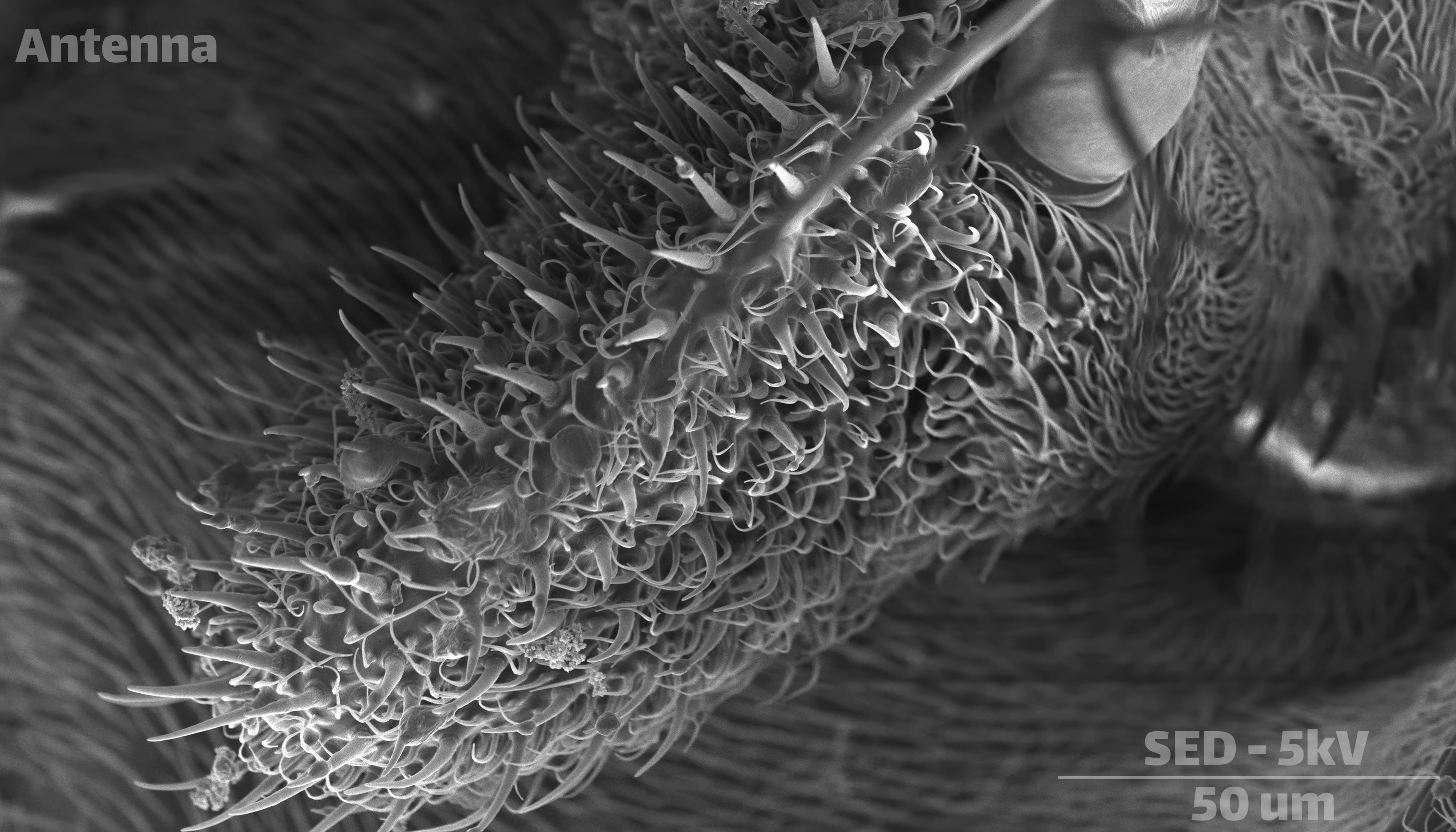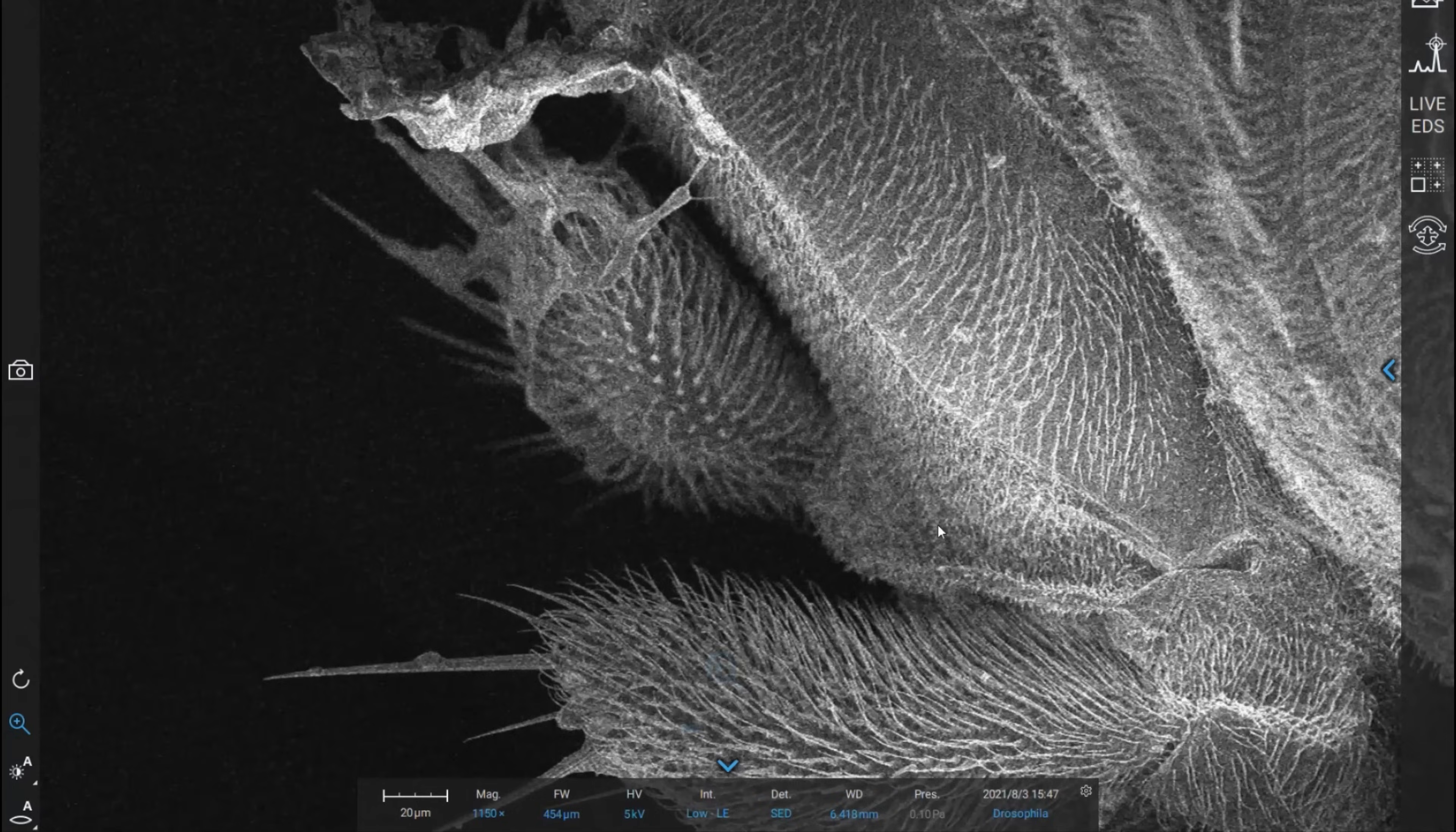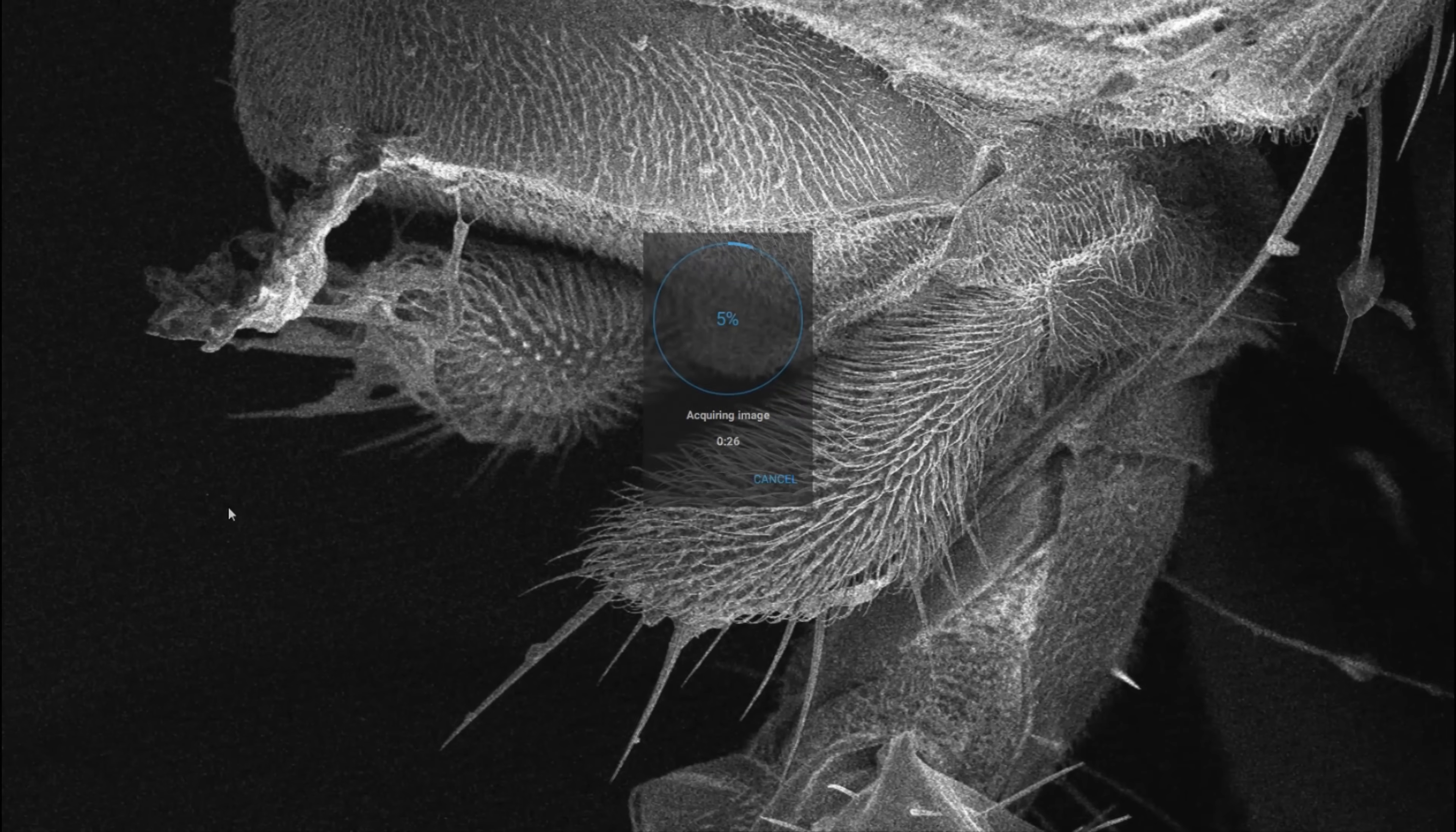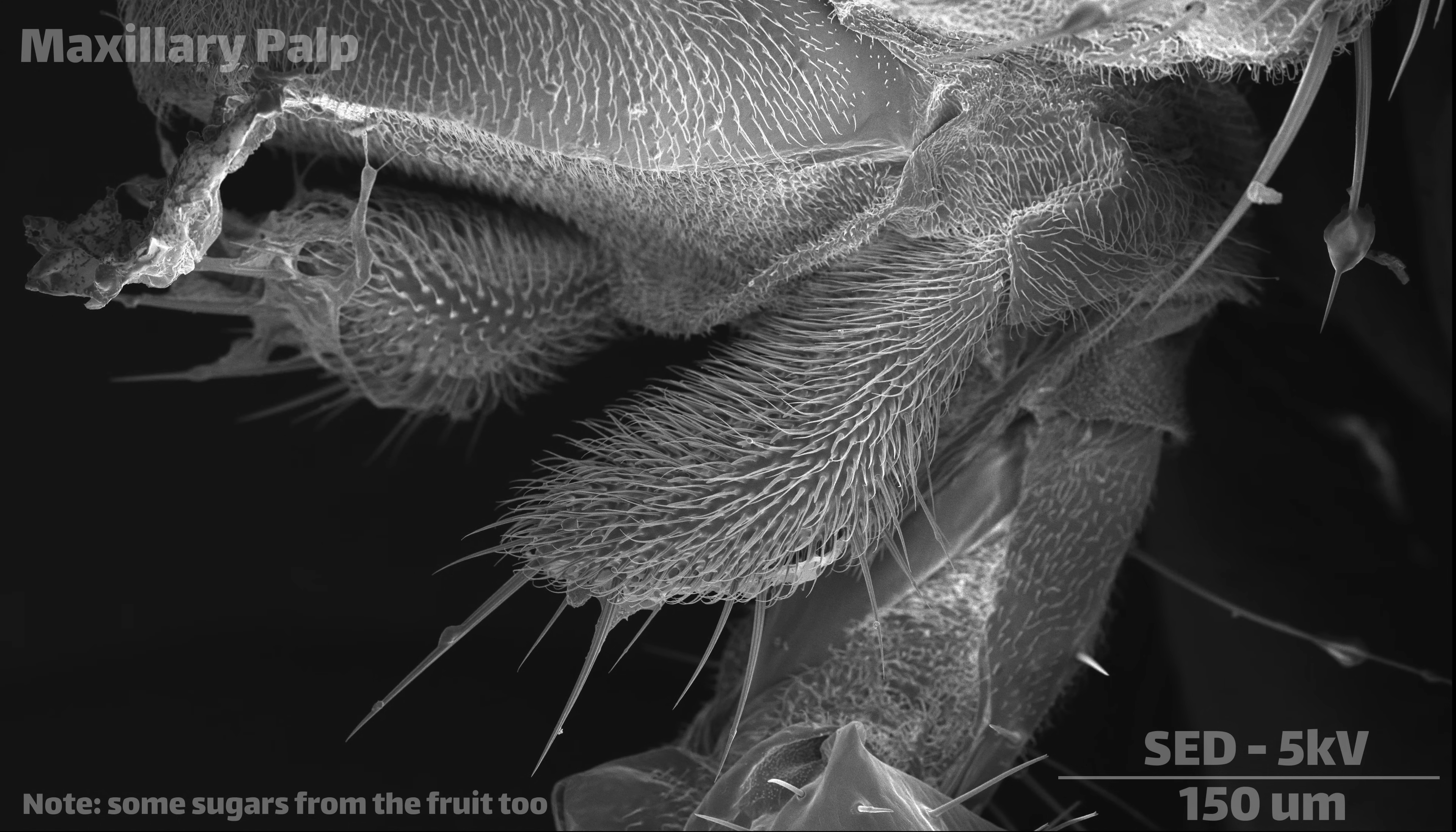They are attracted to ripening fruit, garbage bins, and compost piles, making them natural, if unwanted, roommates to humanity. And while you might see Drosophila descending upon that overripe banana that you forgot in the corner of your kitchen, they are not actually eating the fruit itself. Drosophila feed on yeast cells, which are growing in abundance on top of that fruit.